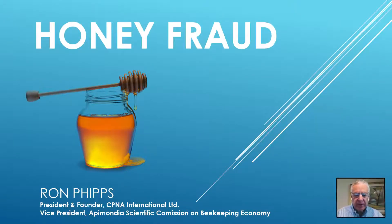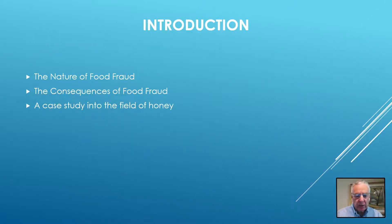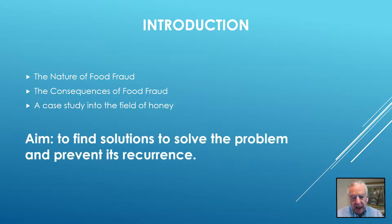The purpose of this presentation is to describe the generic nature of food fraud and its devastating consequences. The presentation will also cite a case study in the field of honey, which the U.S. Pharmacopoeia has classified as the third largest area of adulteration in the current era. Our aim is to find solutions to solve the problem and prevent its recurrence.